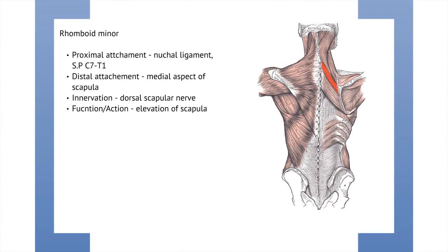The rhomboid muscles — let's start with the rhomboid minor. Its proximal attachment is the nuchal ligament, which we discussed earlier, and the spinous processes of C7 to T1. Its distal attachment is the medial aspect of the scapula. It is innervated by the dorsal scapular nerve, and its function is to elevate the scapula.